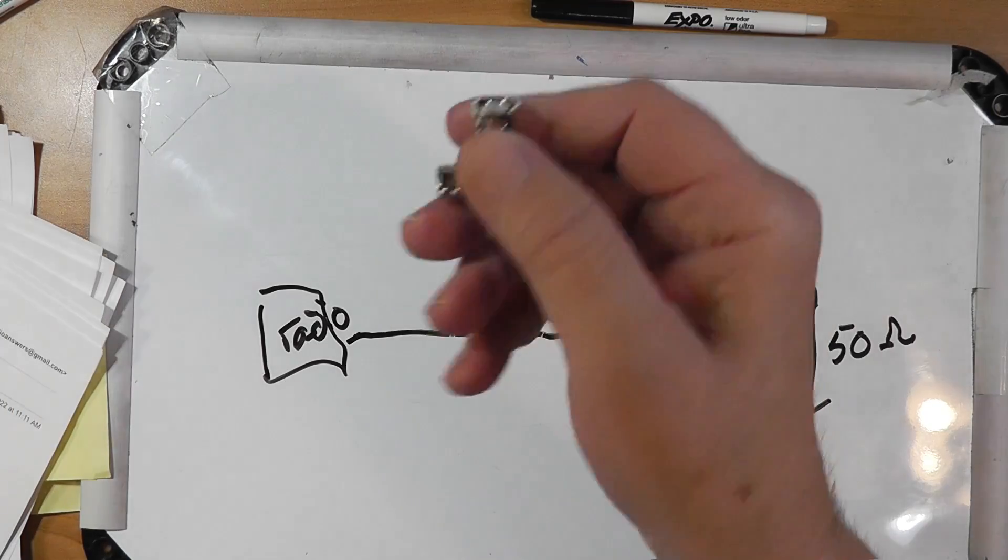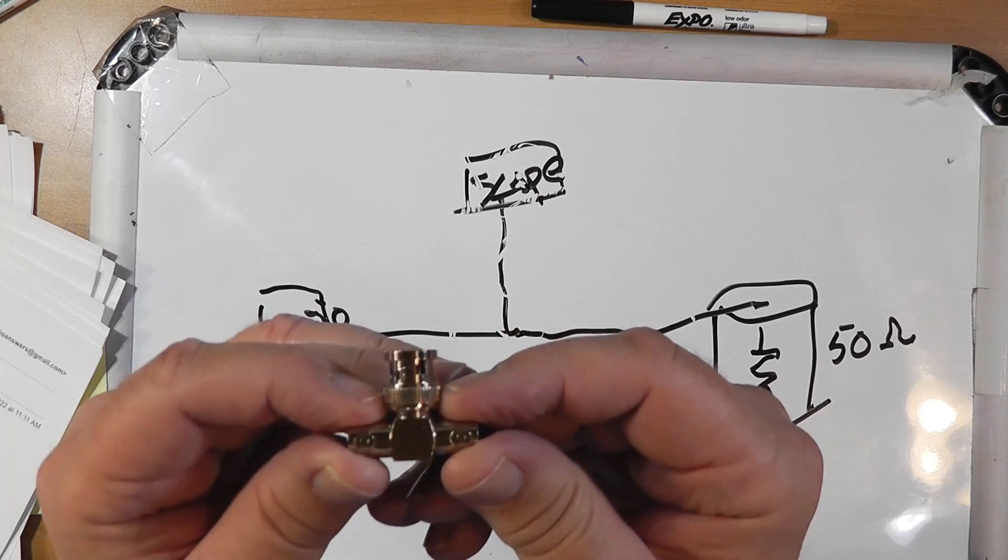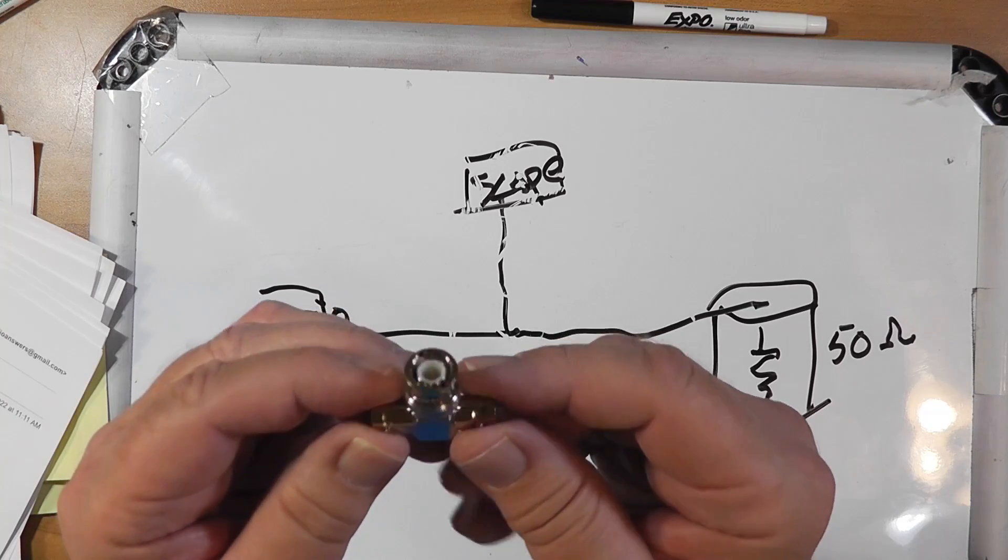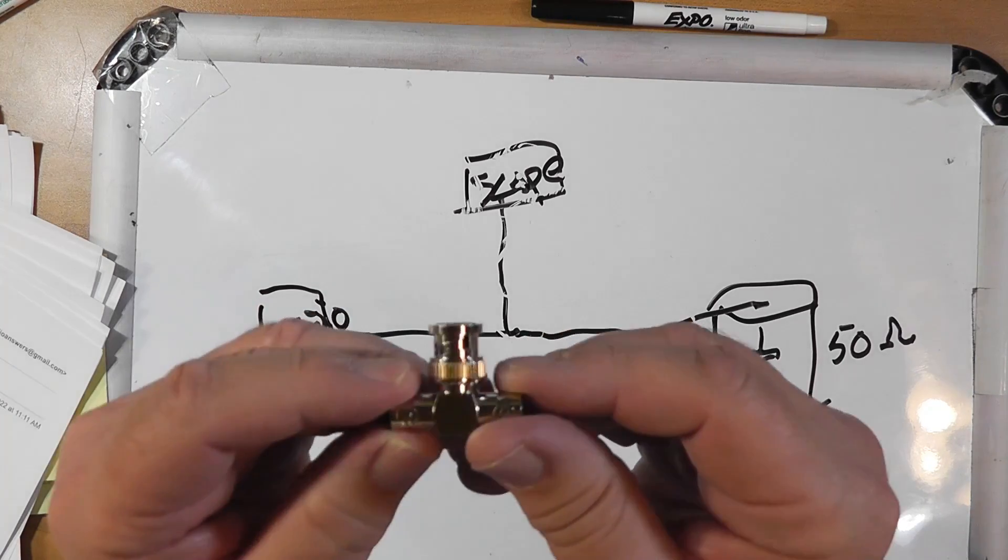Make sure that you tell your scope you're not using a 10 to 1 probe. You're using a 1 to 1 probe. Otherwise, you'll be a factor of 100 off on your power because you're going to square the 10 difference.